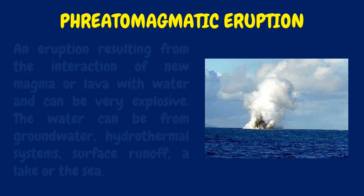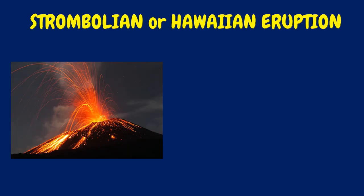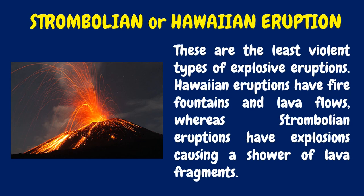A phreatomagmatic eruption results from the interaction of new magma or lava with water and can be very explosive. The water can be from groundwater, hydrothermal systems, surface runoff, a lake, or the sea. Strombolian or Hawaiian eruptions are the least violent types of explosive eruptions. Hawaiian eruptions have fire fountains and lava flows, whereas Strombolian eruptions have explosions causing a shower of lava fragments.